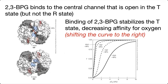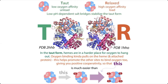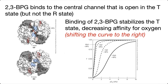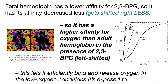2,3-BPG binds to the central channel that is open in the T-form — the unbound form of hemoglobin — but it's not accessible in the R-form, the oxygen-bound form. If BPG binds, you're in a low-affinity state for oxygen, so you're less likely to pick it back up if you were to drop it. Therefore, the binding of 2,3-BPG stabilizes the T-state, decreases the affinity for oxygen, and shifts the curve to the right, meaning that you need more oxygen in order to have the same amount of hemoglobin bound to oxygen.